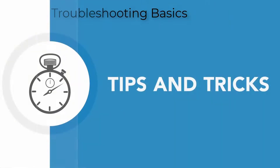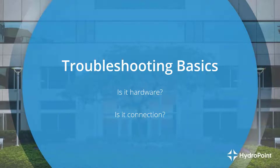Chapter 3: Troubleshooting Basics. When we begin to talk about troubleshooting basics, we're really going through the process of determining whether it's the WeatherTrack hardware in the field that's failed, or if it's the cloud connection or signal strength of one of the devices in the network that's causing your communication issues.